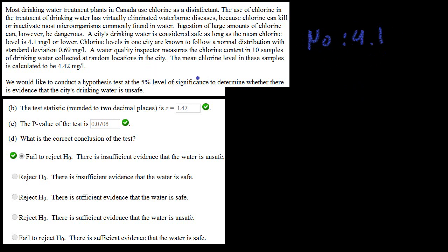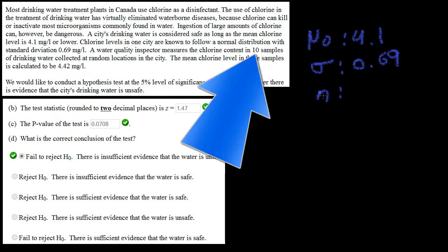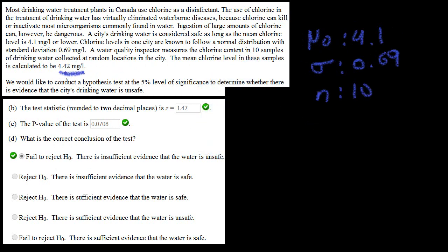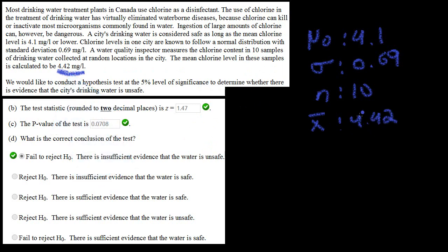The next thing we know is the standard deviation. The standard deviation of the population is given as being 0.69. We know our sample size. The sample size taken for the test was 10. We can also determine the sample mean of the sample size, which is denoted as being x bar. So the value is 4.42. And this is all the data we're going to be needing.